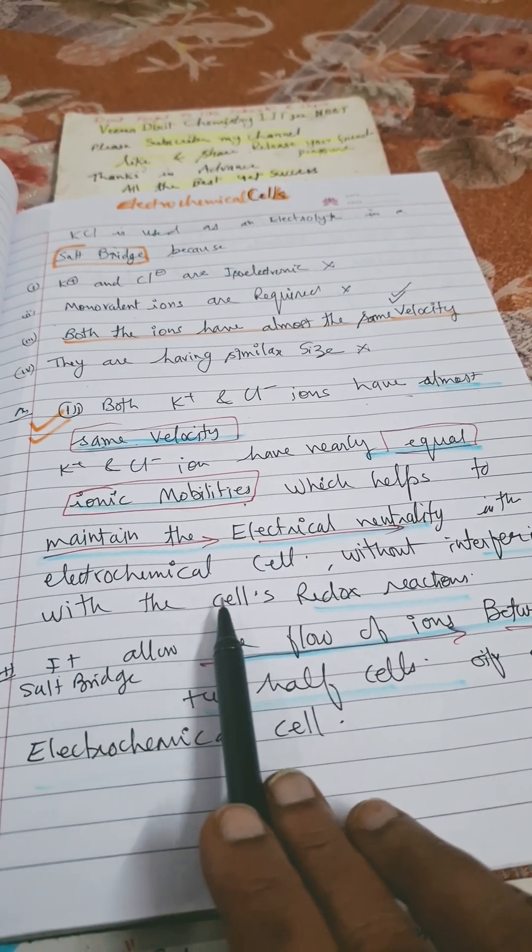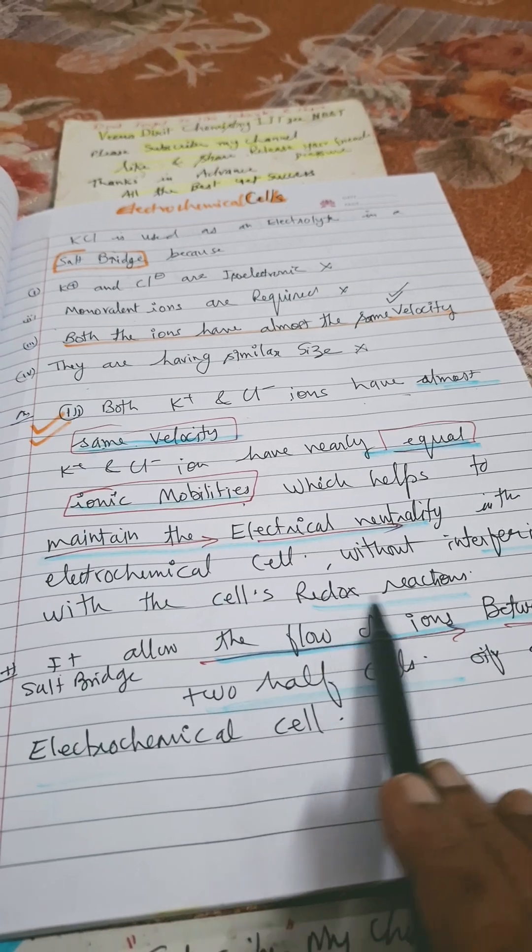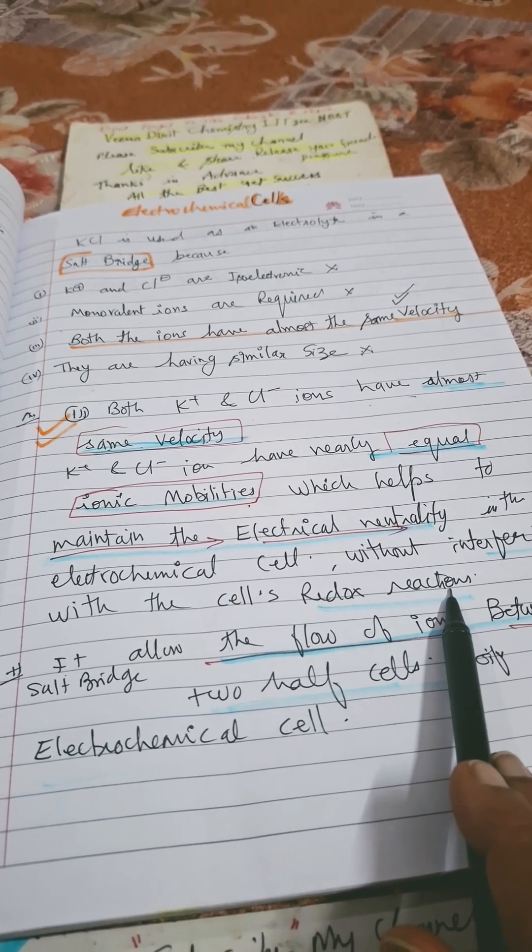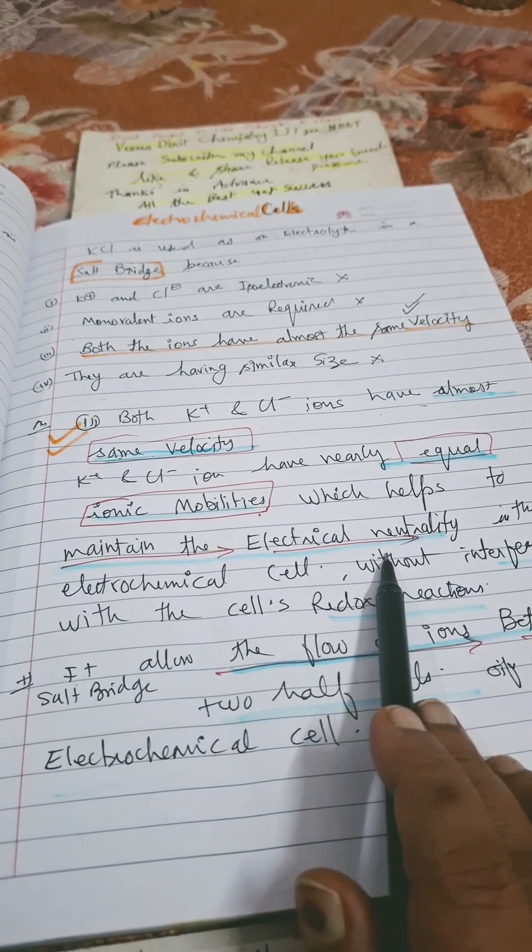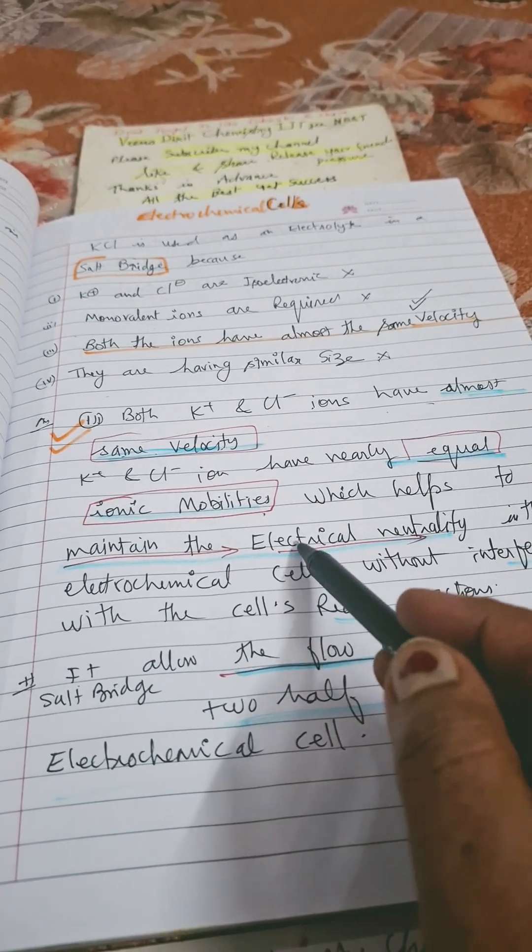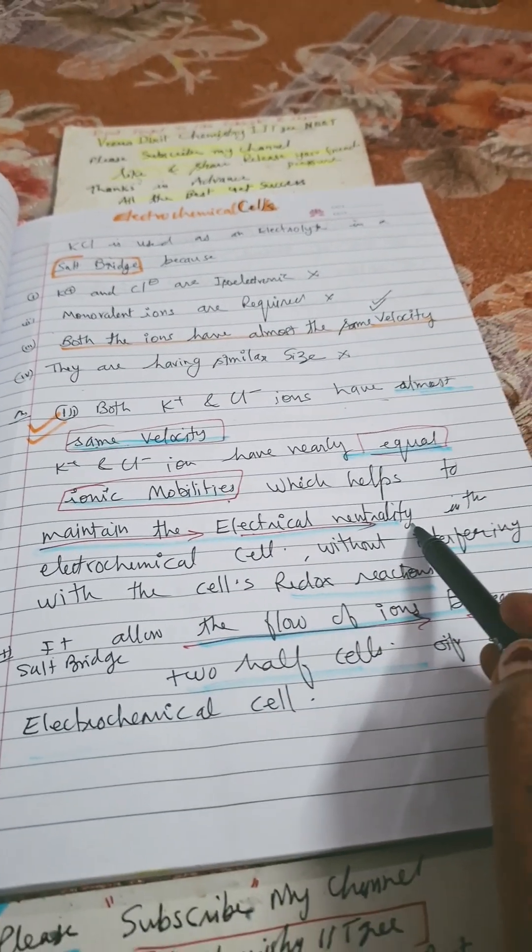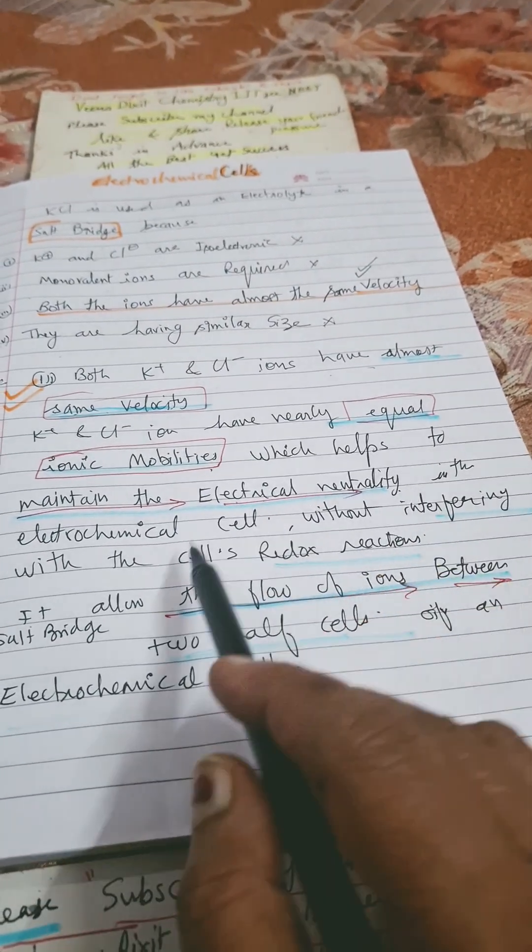If it is a big sentence, you can write down that the salt bridge cannot interfere with the cell's redox reaction and it is helping to maintain the electron neutrality. Small sentence: it maintains the electron neutrality of the electrochemical cell.